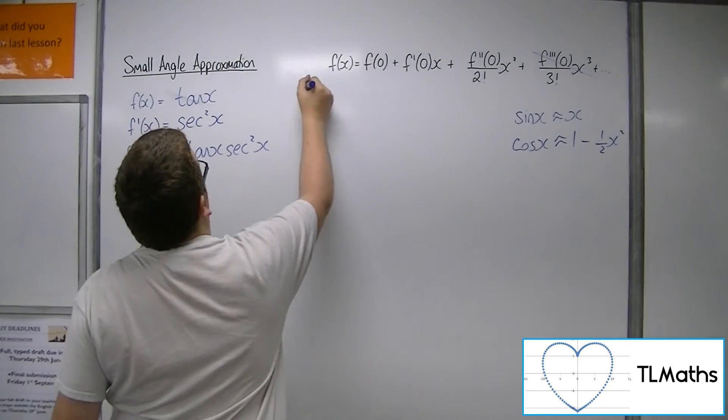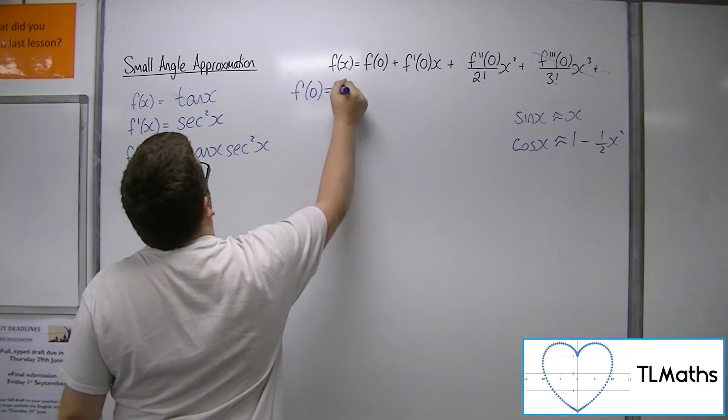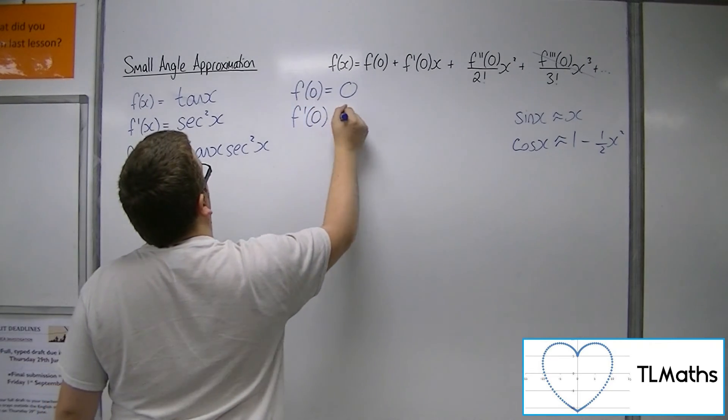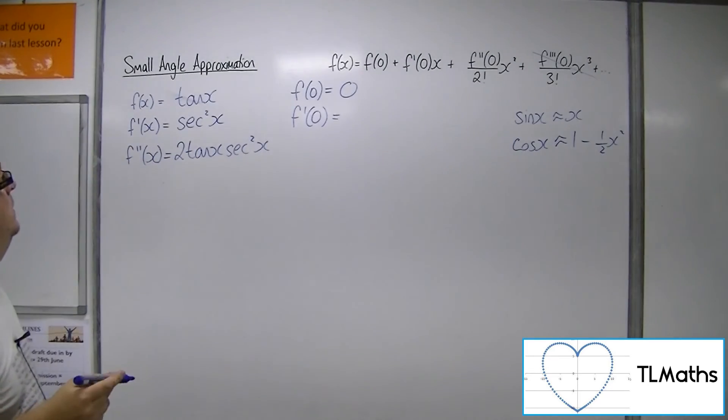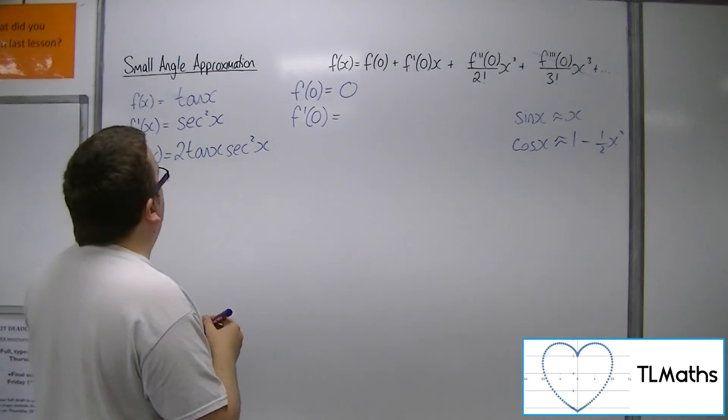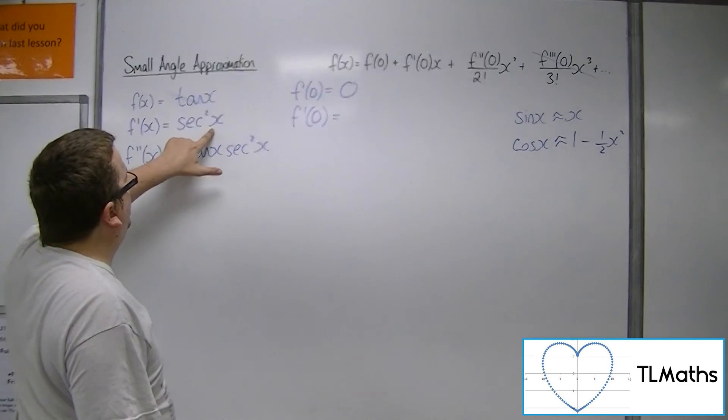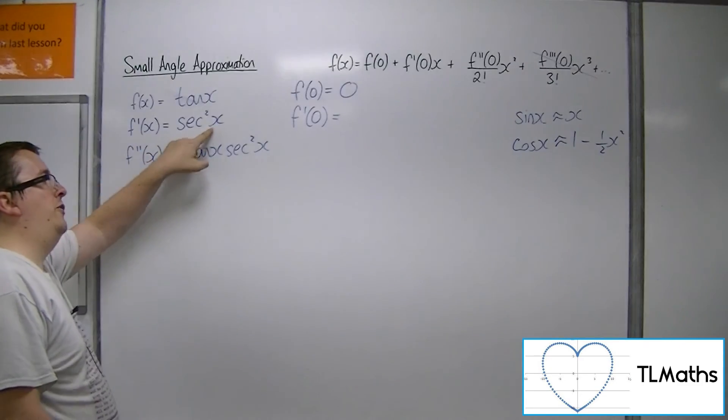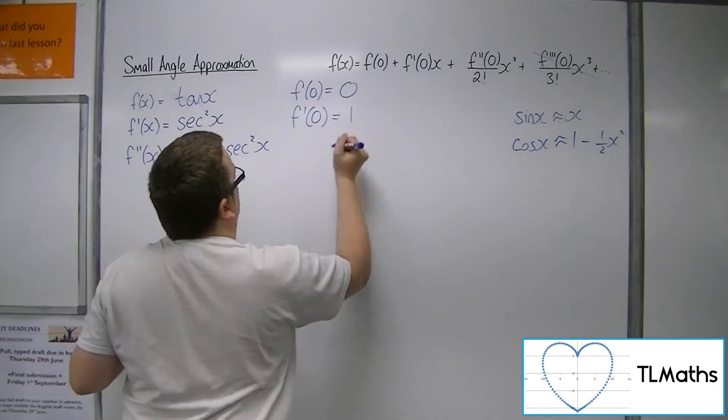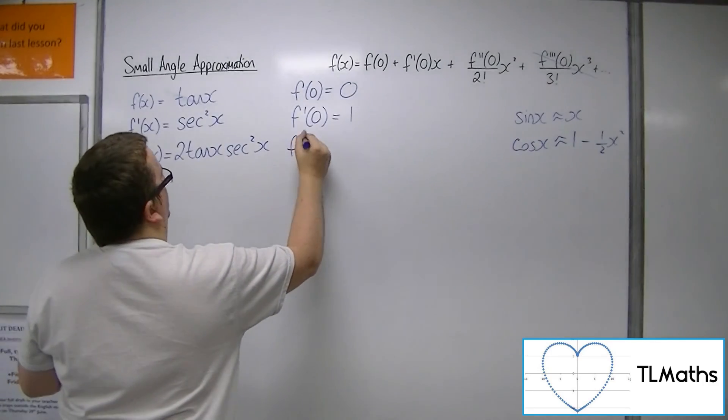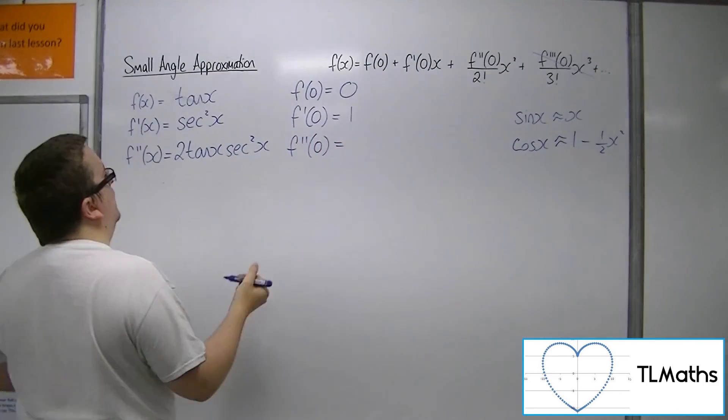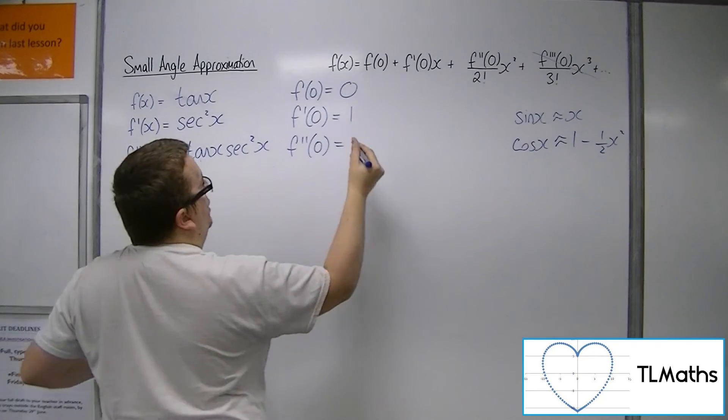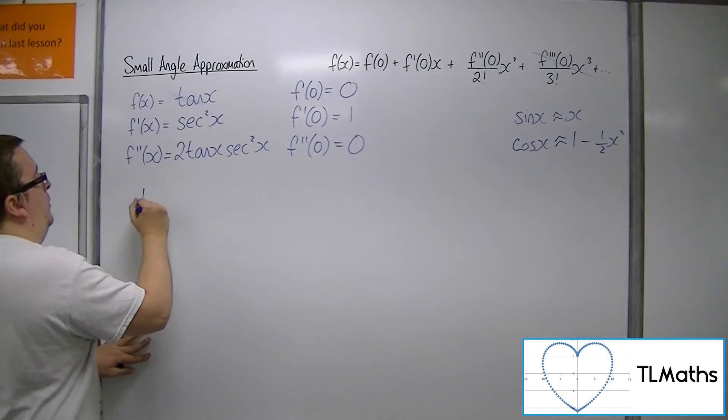So, then, f of 0 is just going to be 0, because tan of 0 is 0. Now, f prime of 0, sec squared of 0, so that's 1 over cos squared of 0, so that's 1 over 1, that's just 1. And f double prime of 0, well, tan of 0 is 0, so that whole thing is going to be 0.